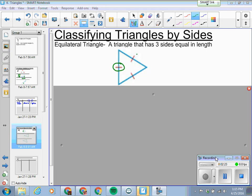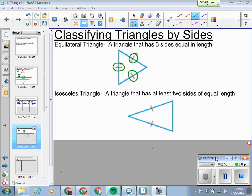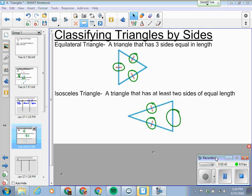So that was classifying triangles by the angles. Now we're going to classify them by their sides. An equilateral triangle is a triangle that has three sides equal in length. The tick marks right here, there's one tick mark on each side that tells you all the sides are the same length.